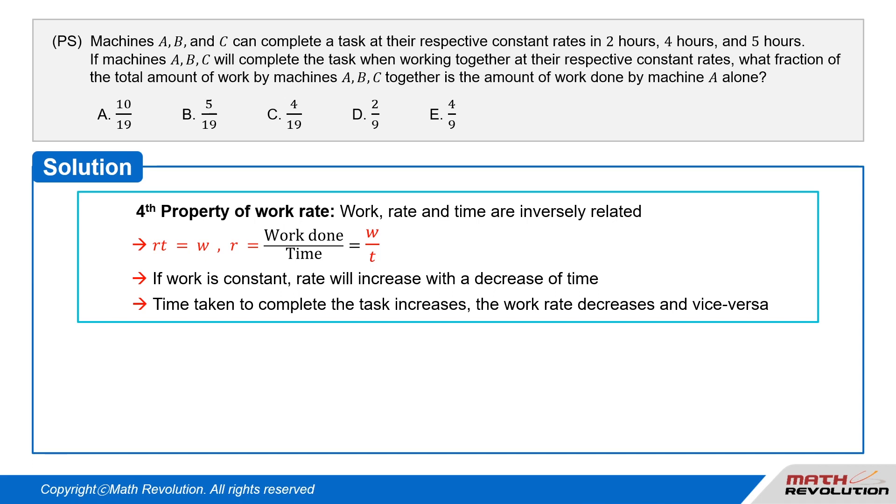Let the rate of work be R and the time taken to do a work W be T. Then R times T equals W. Also, work rate R equals work done over time, which equals W over T. So, if work is constant, rate will increase with a decrease of time.